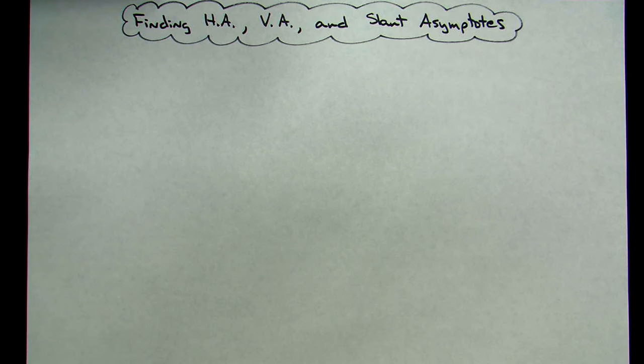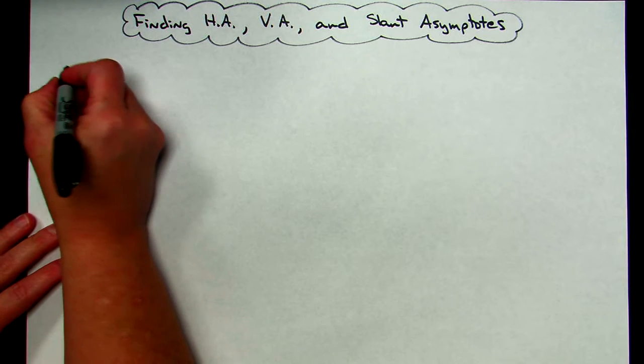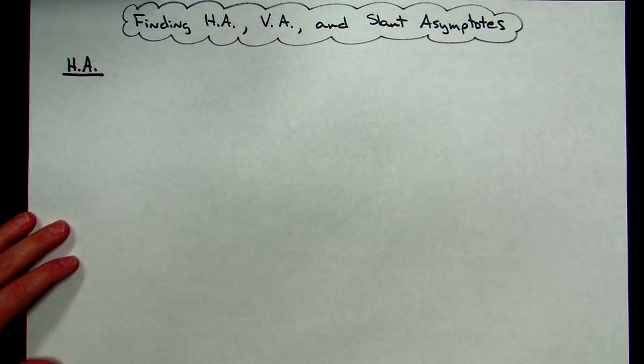Okay, today we're going to be taking a look at how to find horizontal, vertical, and slant asymptotes. Alright, we'll take each one of them individually.